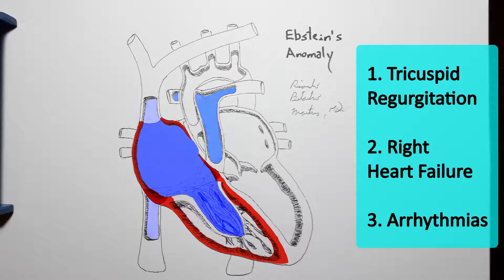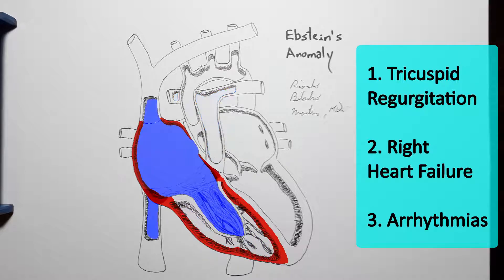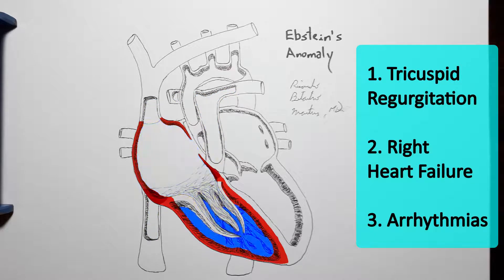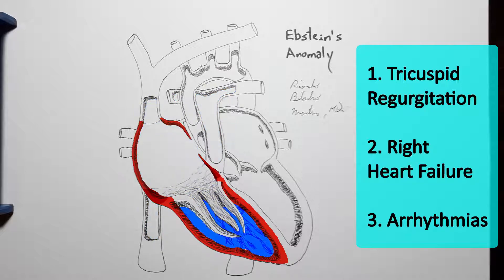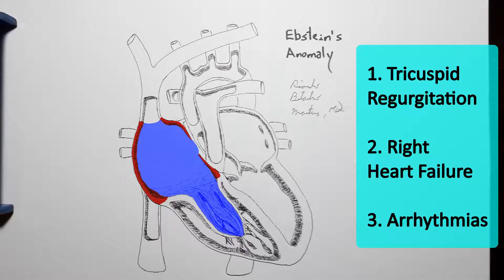...since it has to push the blood twice — first into the right atrium, and then forwards as it should have been from the first time. Eventually, it may lead to right heart failure.